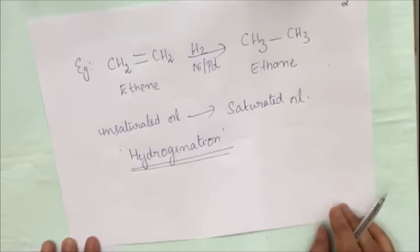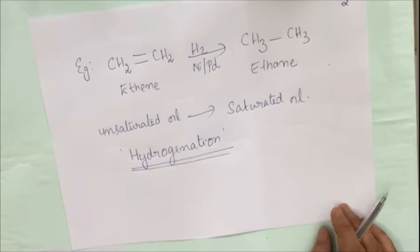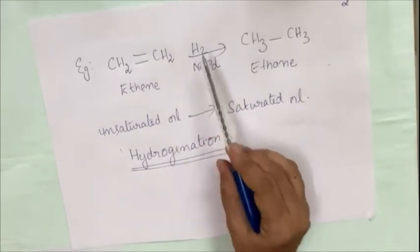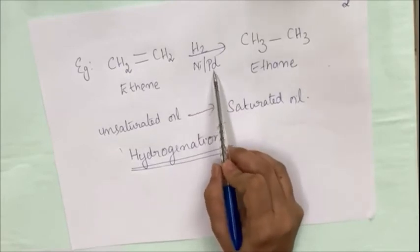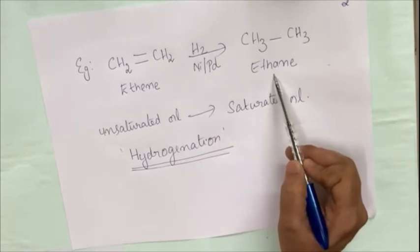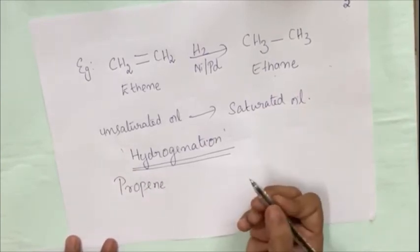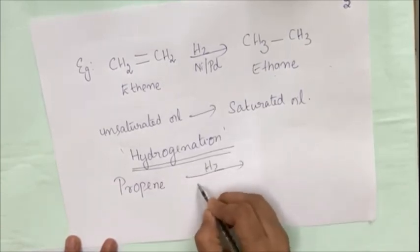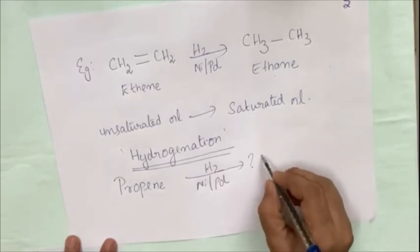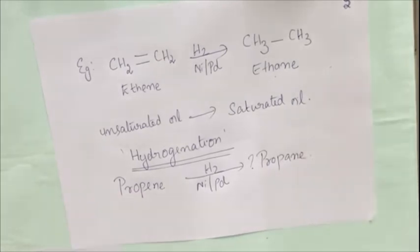Addition reaction is the conversion of an unsaturated hydrocarbon to a saturated hydrocarbon. An example of addition reaction, which is also a hydrogenation reaction, is the conversion of ethene to ethane. Ethene is CH2=CH2, and in the presence of hydrogen with nickel or palladium as catalyst, it gets converted to the saturated hydrocarbon ethane. If you take propene as the unsaturated hydrocarbon, the hydrogenation product would be propane. This is also an example of addition reaction.